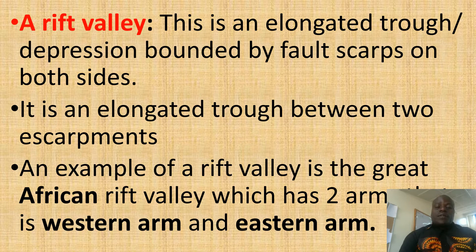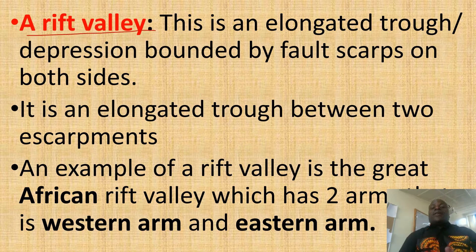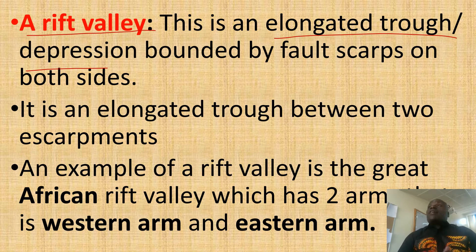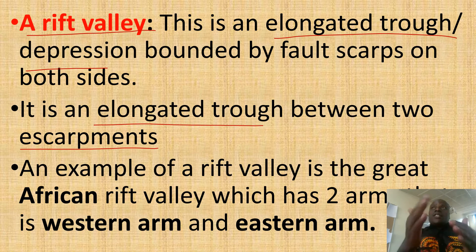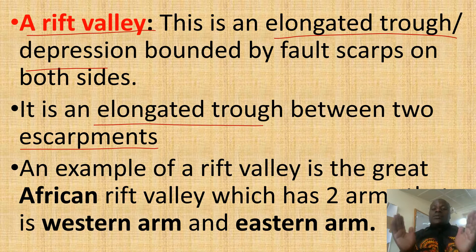So what is a rift valley? This is an elongated trough or depression bounded by fault scarps on both sides — between two escarpments, the steep sides of the rift valley. This elongated valley, depression, or trough between the two steep escarpments is what we call a rift valley.